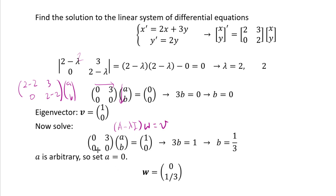Now we solve (A minus lambda·I)·w equals v. With lambda equals 2, (A minus 2I) is the matrix with entries 0, 3, 0, 0, and we need this times w equals v equals (1, 0). Multiplying out gives 3b equals 1, so b equals 1/3. There is no equation constraining a, so a is arbitrary. This time we choose a equals 0 — simpler than 1 — and it's fine since the vector (0, 1/3) is not trivial. So w equals (0, 1/3).